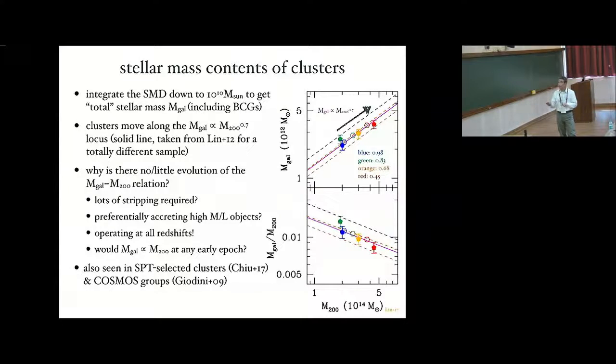So I'm still very puzzled about the time invariance of the stellar mass-halo-mass relation. And I want to emphasize that this is not just seen by us, but also from an SPT-selected cluster sample, done by Chiu and Joe, as well as the groups from the COSMOS field, as done by Giodini et al. So if you have good ideas, please share with me. And I would really love to push this kind of study to a higher redshift.